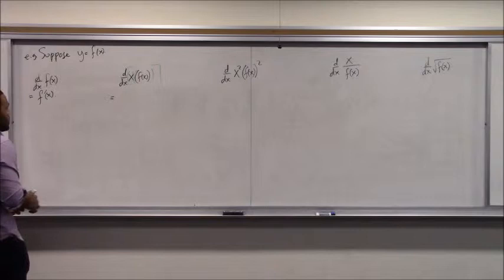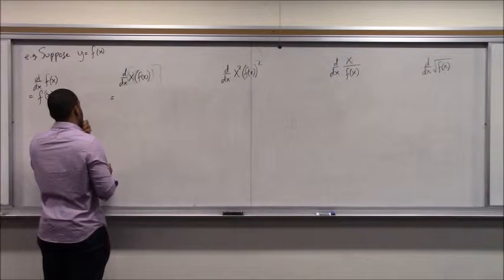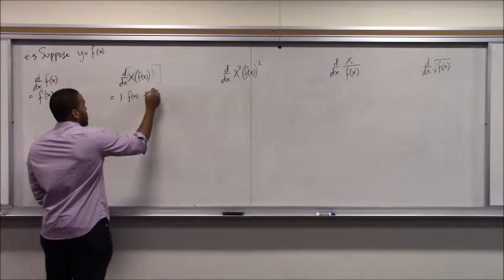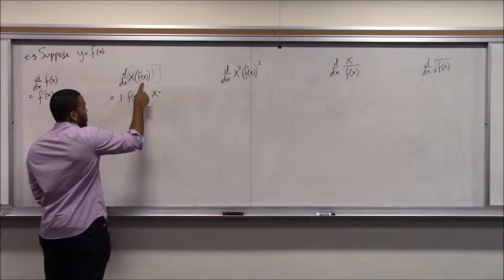Using the product rule: I differentiate the x — leave f(x) alone — derivative of x is 1, times f(x). Plus, now I put the x back and differentiate f(x). The derivative of f is f prime. So we get 1 times f(x) plus x times f prime.